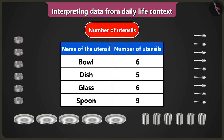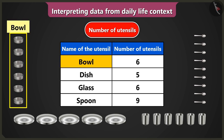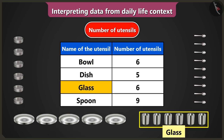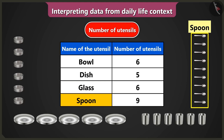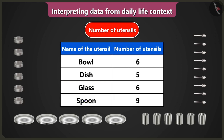The data about utensils we have is given in this table. The data about names of the utensils is given in the first column and the data about the number of utensils is given in the second column of the table. Names of utensils — bowl, dish, glass and spoon are written here. So the data about four kinds of utensils is given.